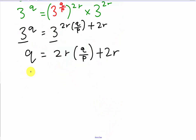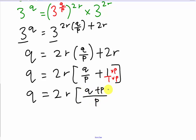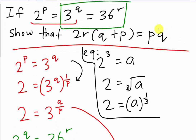Since both sides have only the base 3, I can compare their powers directly. So Q equals 2R times (Q/P + 1). I simplify by giving the bracket a common denominator: Q/P + 1 becomes (Q + P)/P. So Q equals 2R times (Q + P)/P.